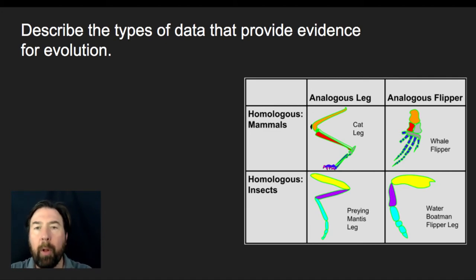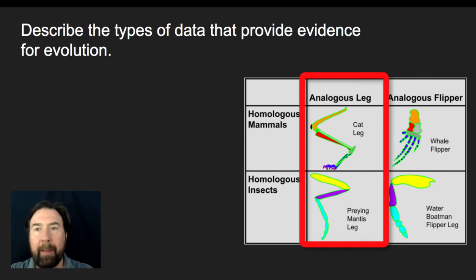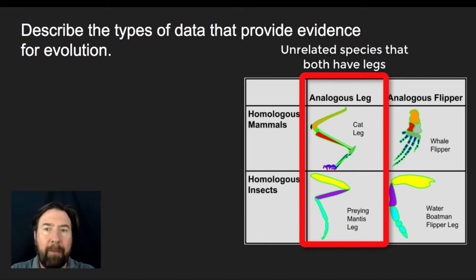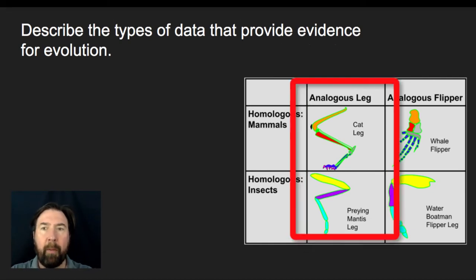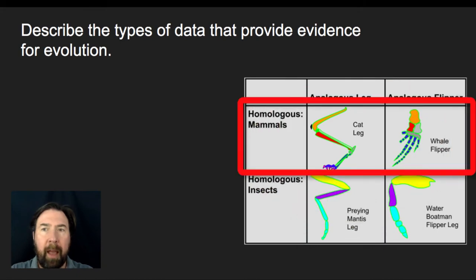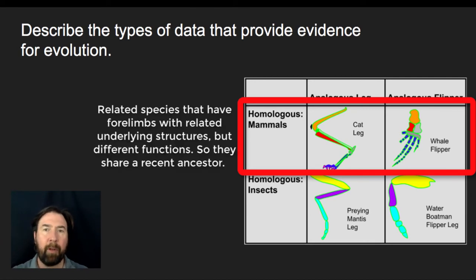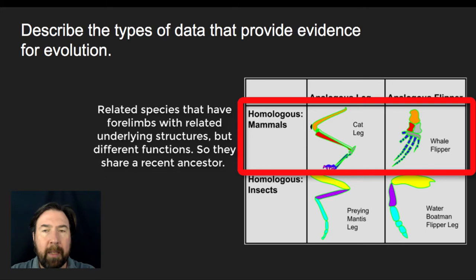We would look at analogous structures of two things that had legs, but the underlying structures behind these analogous legs are different, so they must be from different types of organisms. We could also look at homologous structures and say, even though these have very different functions, they clearly have the same underlying structure, and so they must share a recent common ancestor.